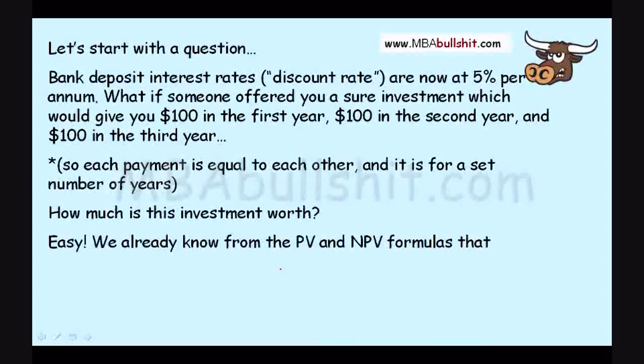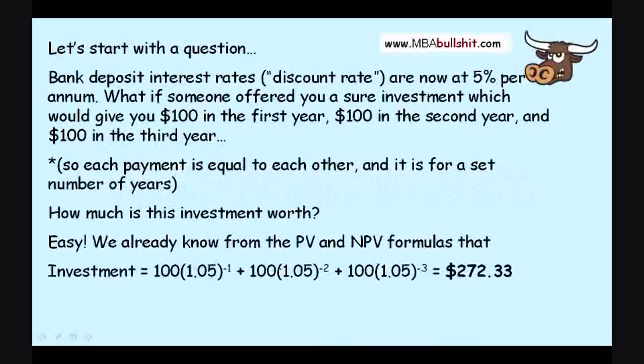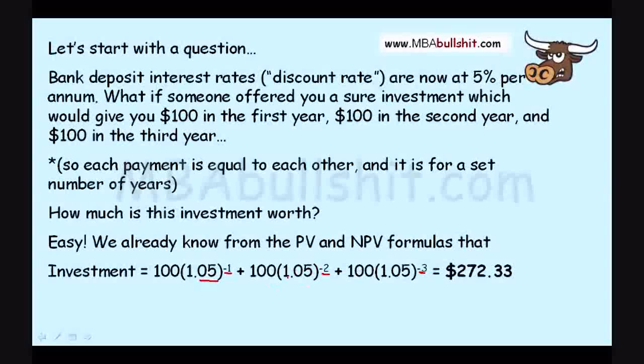Well, we already know from the present value and net present value formulas that the investment is worth $100 multiplied by 1.05 raised to the negative one for year one, and raised to the negative two for year two, raised to the negative three for year three. And we will find that this investment using the net present value formula is $272.33.